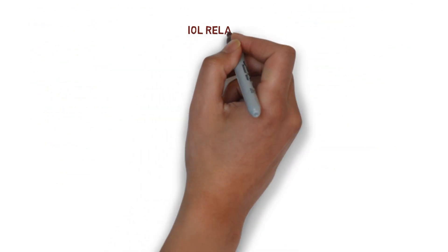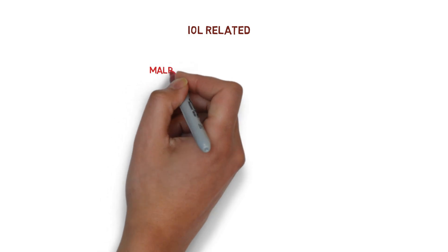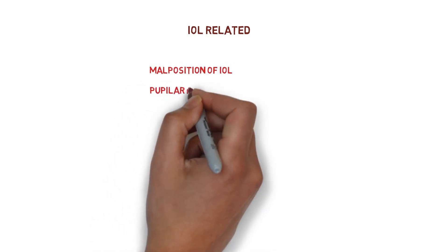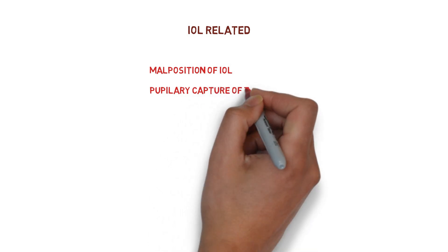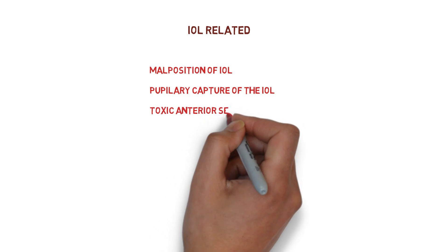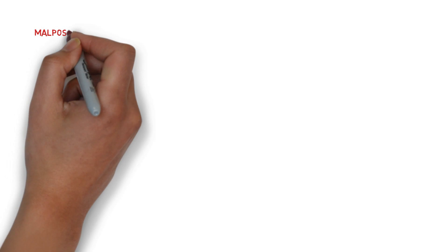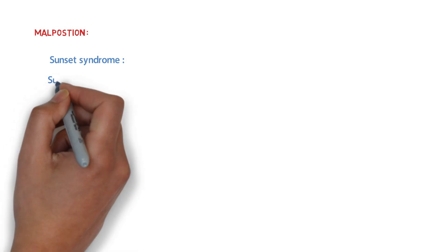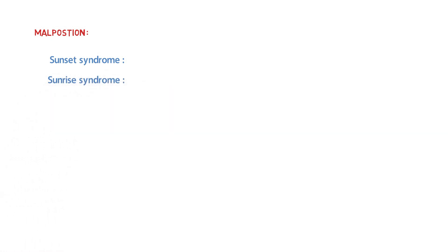Finally, intraocular lens (IOL) related complications include malposition of the IOL, pupillary capture of the IOL, and toxic anterior segment syndrome. In malpositioning, there may be sunset syndrome or sunrise syndrome. In sunset syndrome, there is inferior subluxation of the intraocular lens.